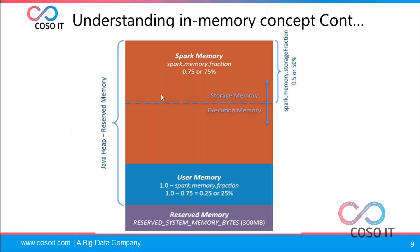This is a high-level diagram of how memory is split. Memory can be defined as a JVM property. Out of the total JVM heap memory, we can only use 75 percent, so we have to decide carefully how much memory to allocate.